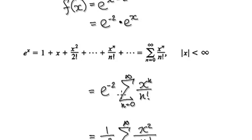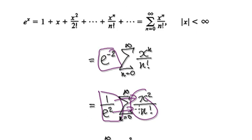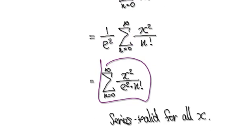So now just rewrite this as 1 over e squared. So now you can just multiply this, multiply it in here. So that will then become this. So this is your final series.